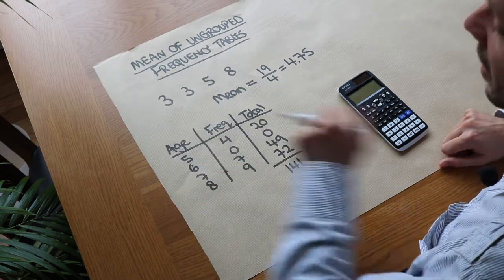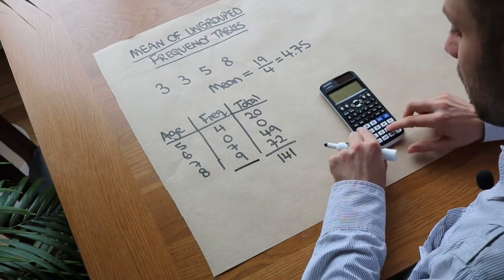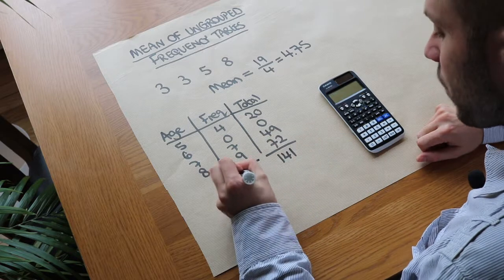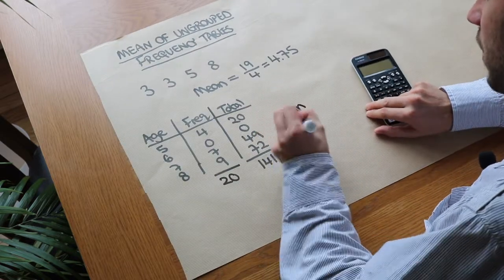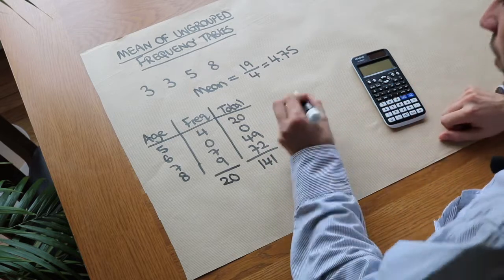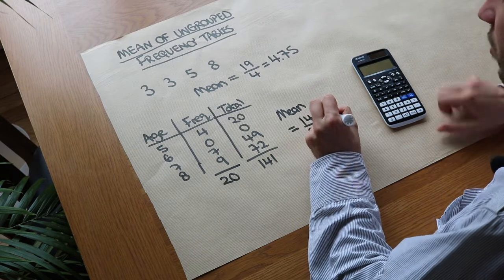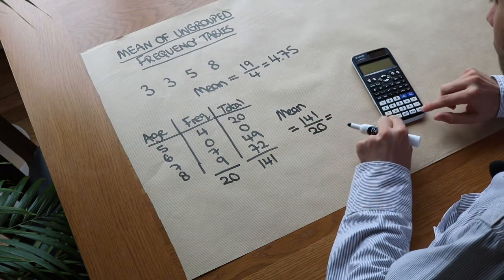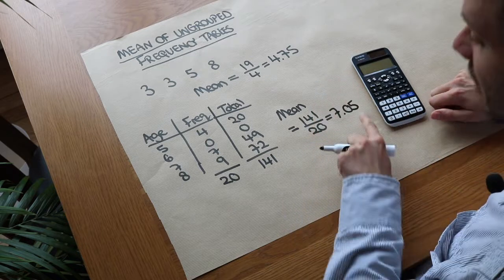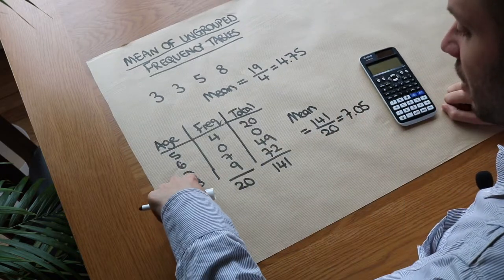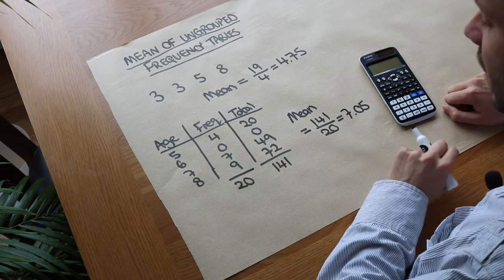The number of people is the total frequency — the frequency tells us how many people in each group, so the total frequency is the total number of people. Adding those up: 4 plus 7 plus 9 gives us 20. So the mean is 141 divided by 20, which gives us 7.05. That's sensible because we have more people towards the older ages.